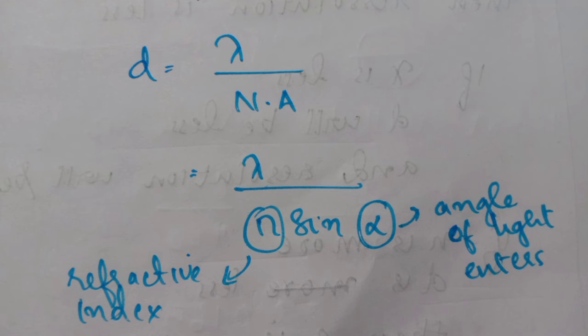Coming to next is the refractive index. You know that refractive index in each medium will be different. For example, the refractive index of air is 1.003, water is 1.33, and oil is 1.51.